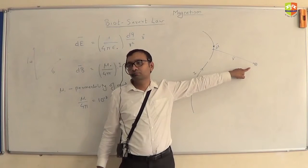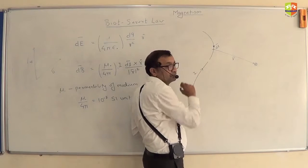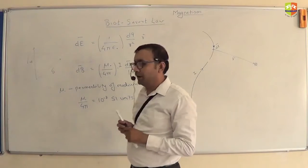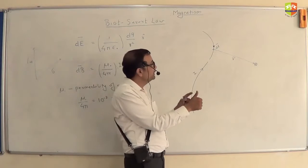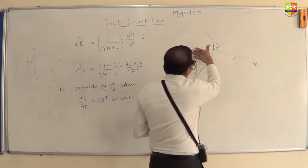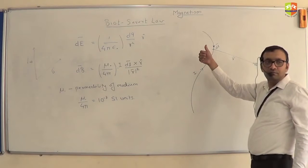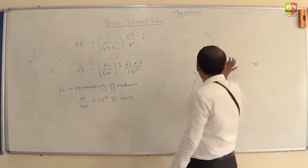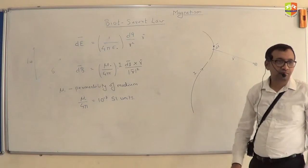So the direction of the magnetic field is into the board, and this will be the same for whichever dl element you take along the wire. Another simple way to find the direction of the magnetic field: use your right hand, align your thumb with the direction of current, and fold your fingers — on one side the magnetic field goes inside and on the other side it comes out, forming a loop around the wire.